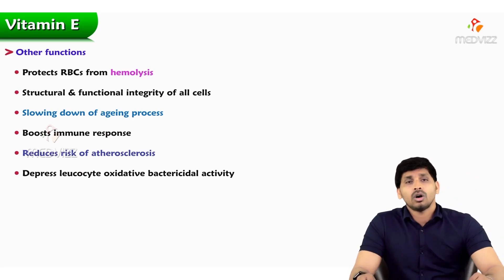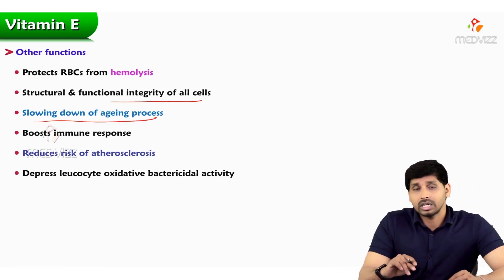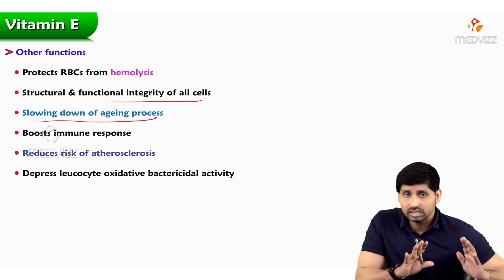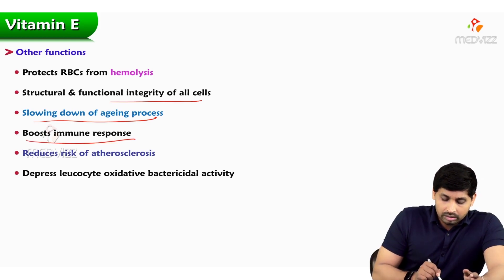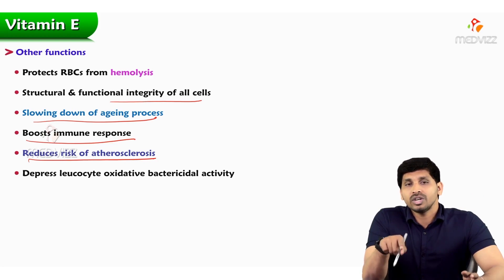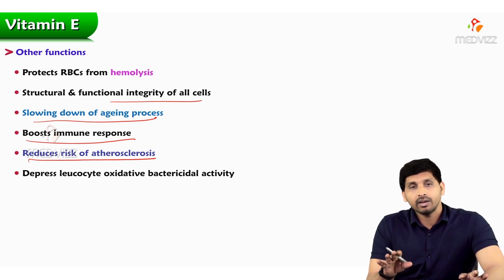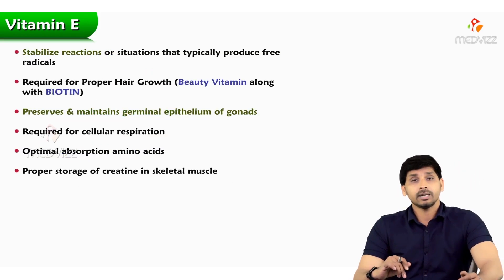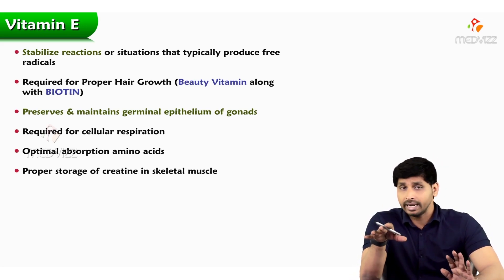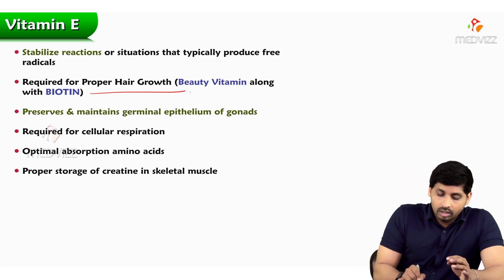Other functions of vitamin E: RBCs are also made up of cell membranes, so vitamin E protects RBCs from hemolysis, maintains structural and functional integrity of all cells, and slows down the aging process — so if you want to look younger, your food should include vitamin E enriched foods. It also boosts immune response and reduces the risk of atherosclerosis by preventing the oxidation of LDL. It stabilizes reactions that typically produce free radicals.